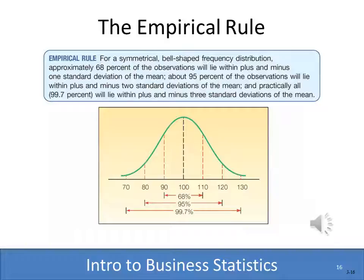95% will fall within plus or minus two standard deviations of the mean. Looking at the chart, the mean is 100, so between 90 and 110 — plus or minus one standard deviation of 10 — 68% of the values will lie. Between 80 and 120 is 95%, and practically all — 99.7% — will fall within plus or minus three standard deviations of the mean. You'll have a lot more time to understand this as we go further in this class.